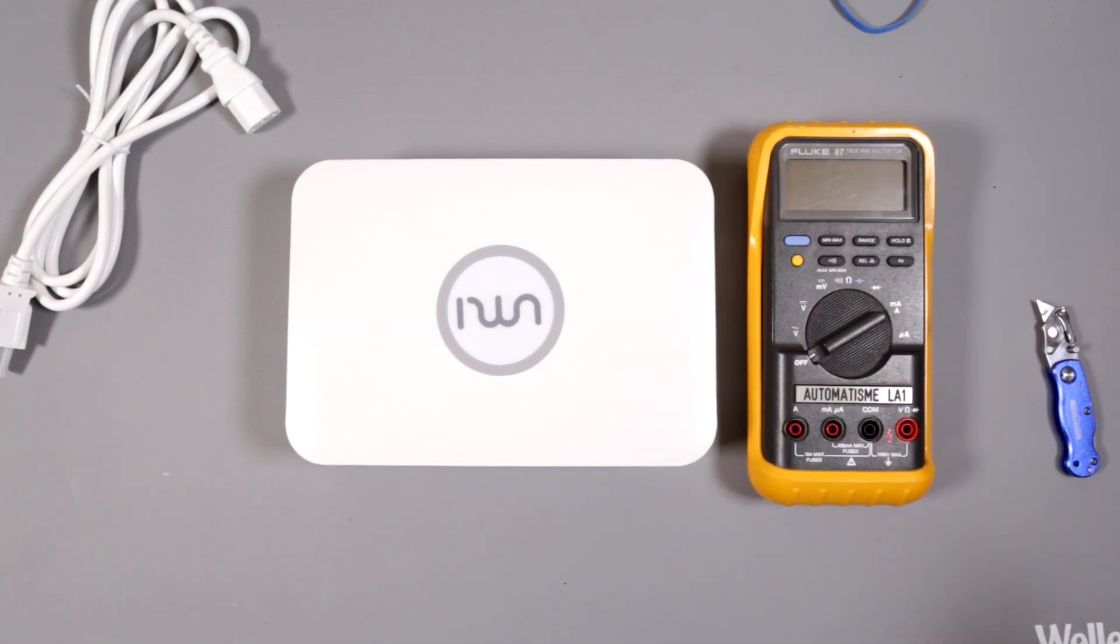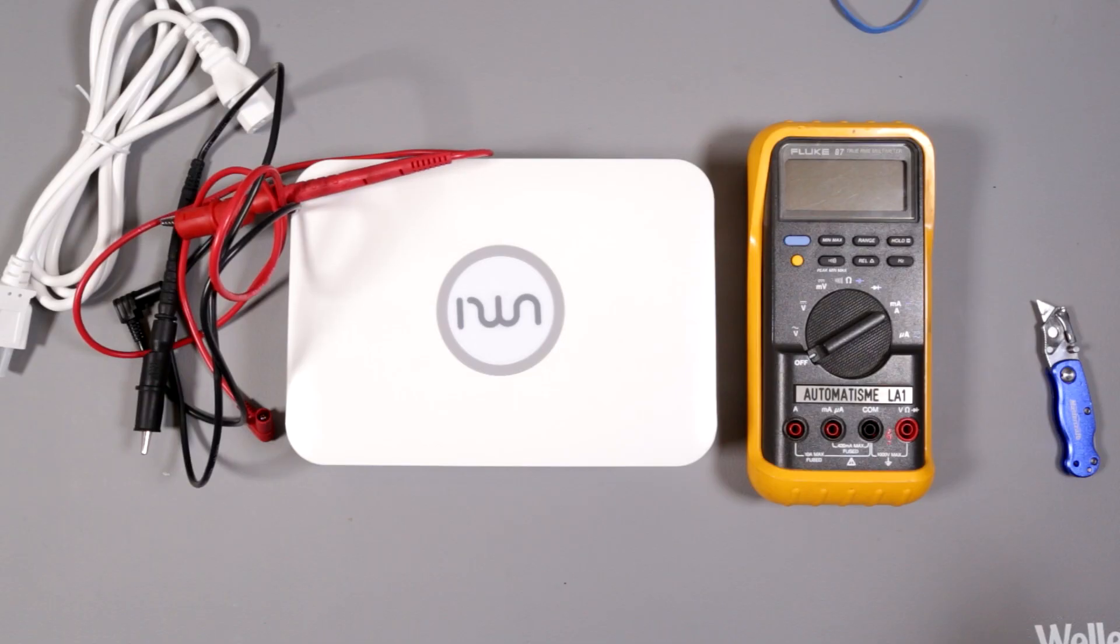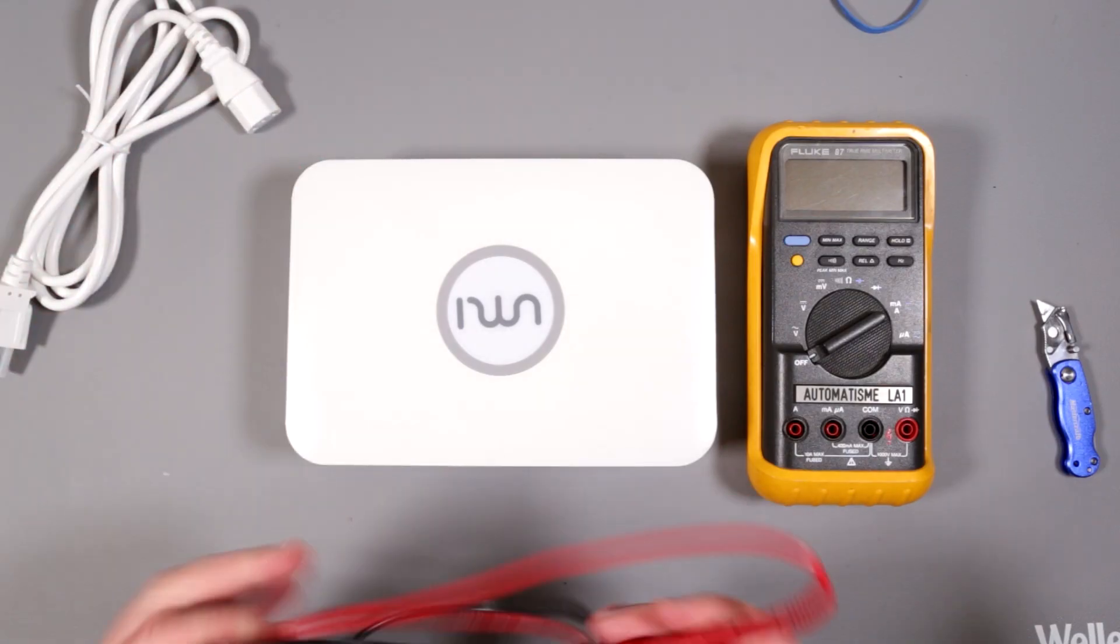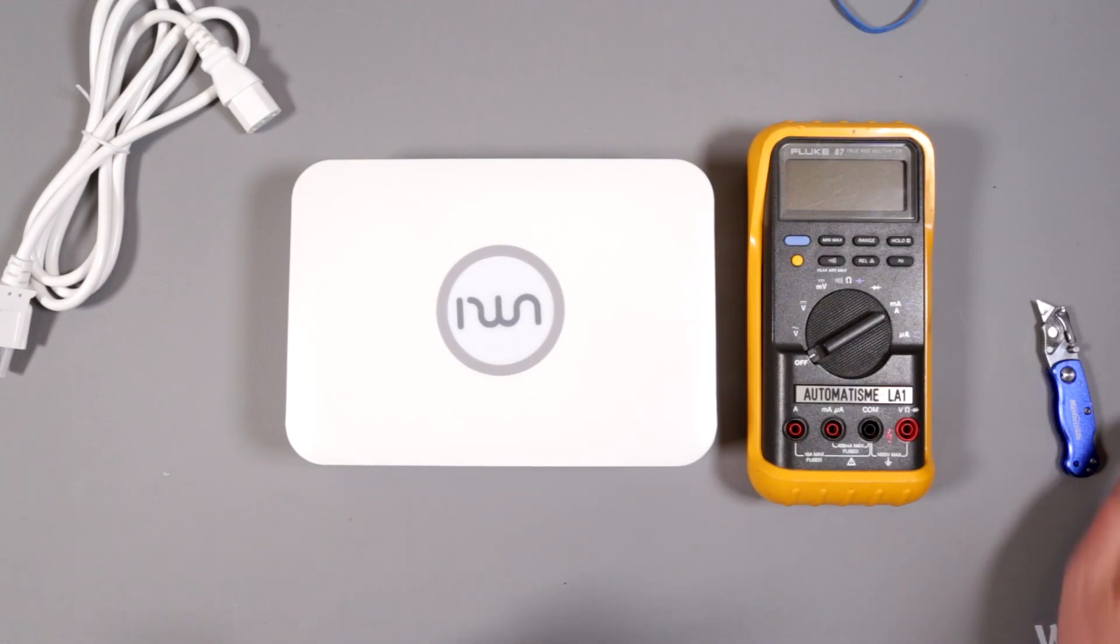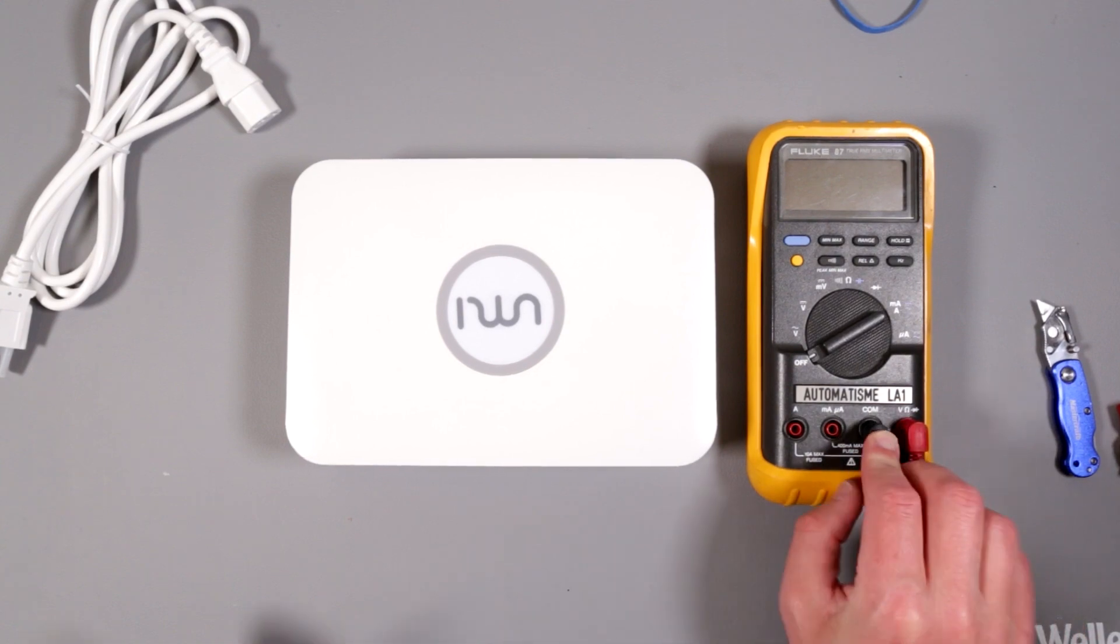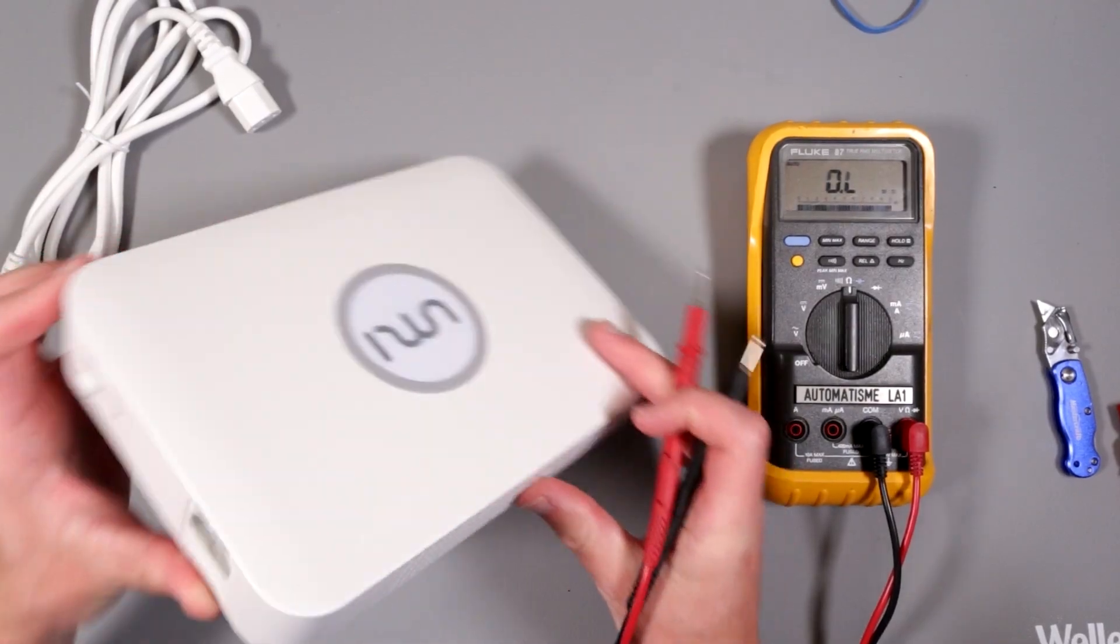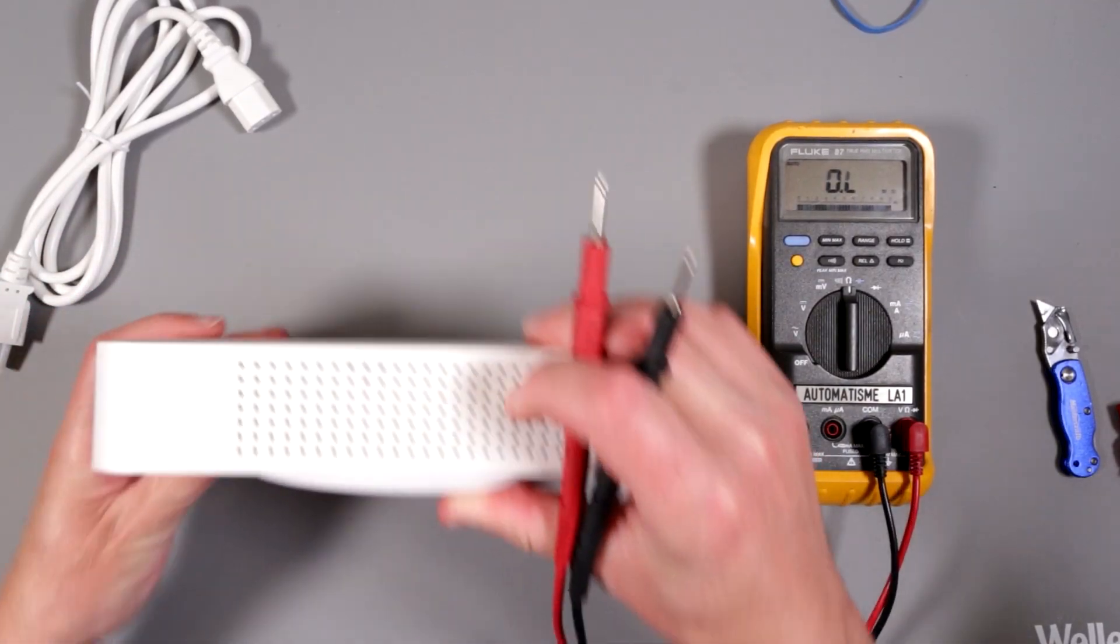Alright, so here is multimeter. And we will prove or disprove such theory about this thing. Everything's falling down. Okay, so we have a multimeter. You would need multimeter anyways to double check if it's actually 100 volts.